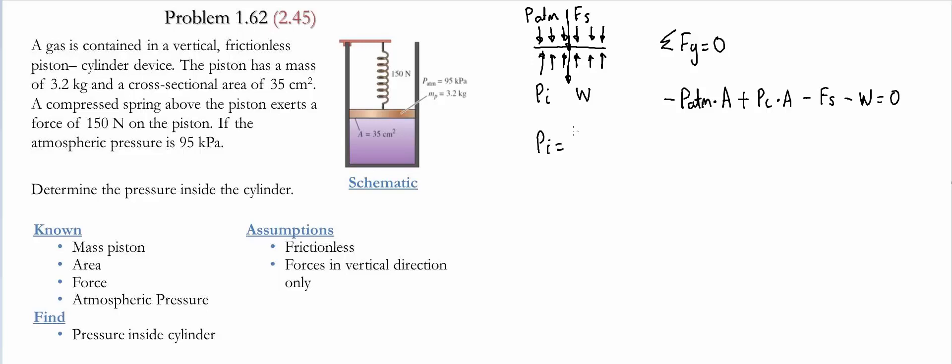Then we solve for P_i, the inside pressure. And that is simply going to be the force of the spring, the weight, the atmospheric pressure times the cross-sectional area, and we divide all this by the area. So we substitute now the values. This is going to give us 150 newtons. The weight is going to be the mass of the piston, which is 3.2 kilograms, and multiply it by gravitational acceleration. Then we have the value of the atmospheric pressure. And to keep the units consistent, we're going to do it in pascals. So 10 to the 3 pascals. And we multiply it by the area.